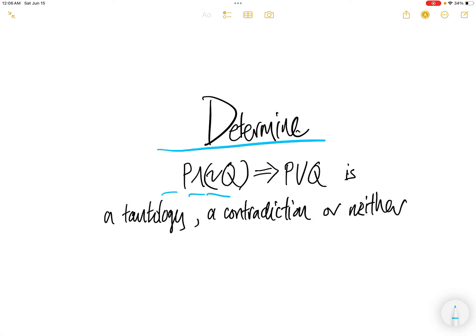Determine p and not q, imply p or q, whether this is a tautology, a contradiction, or neither.